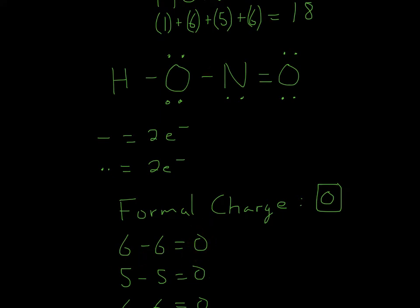Moving on to nitrogen, 1, 2, 3, 4, 5. 5 minus 5 is equal to 0, because nitrogen is in group 5. So 5 minus 5 is equal to 0.